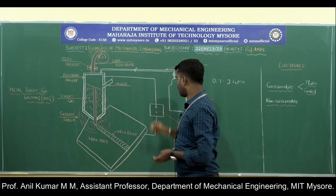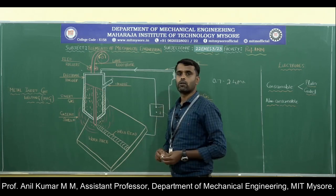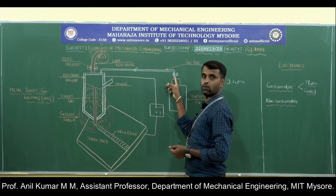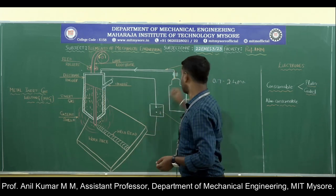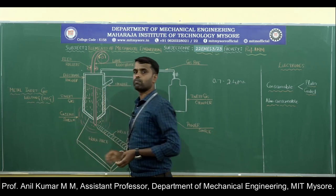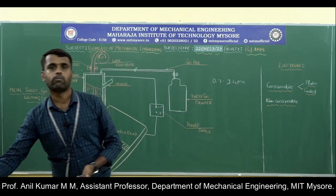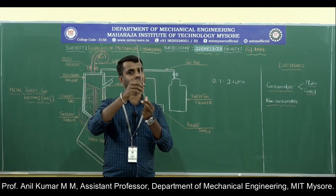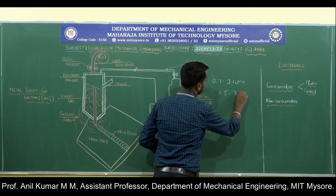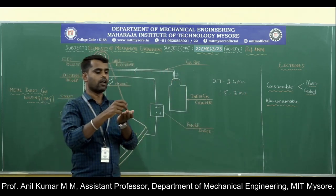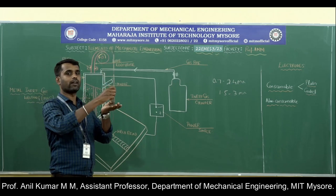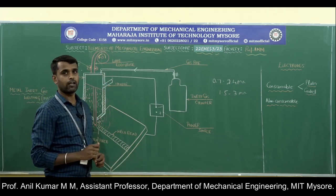The electrode is connected to the negative terminal of the power source and the workpiece is connected to the positive terminal. When you turn on the power source and the cylinder, a pressure regulator controls the flow rate of the inert gases. Current flows through the electrode and the workpiece. Initially, bring the electrode closer to the workpiece surface, touch it, and then momentarily separate it by a small gap of around 1.5 to 3 mm. At that time, the electric arc will be stabilized and struck between the electrode and the workpiece. This arc temperature is very high.